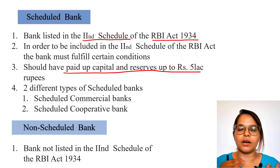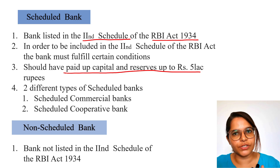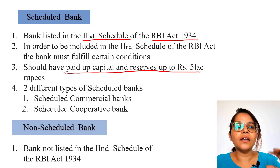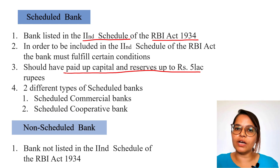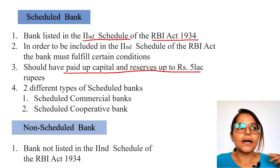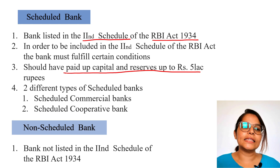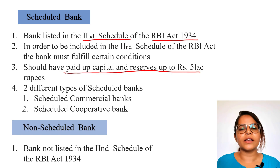To summarize scheduled banks: they are those mentioned in the Second Schedule of RBI 1934; they must fulfill certain conditions, including having paid-up capital of more than five lakh rupees; and they are further classified into scheduled commercial banks and scheduled cooperative banks. Non-scheduled banks, on the other hand, are those banks which are not mentioned in the Second Schedule of the RBI.